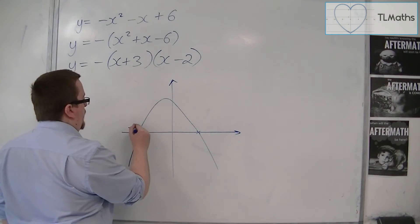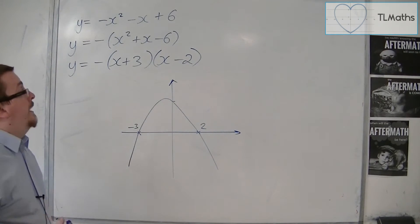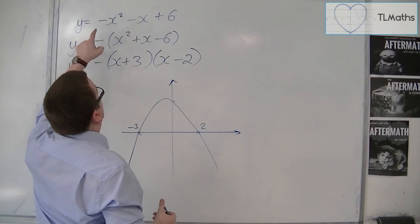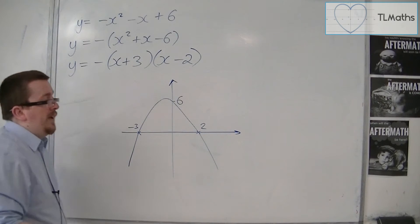So there's minus 3, there's 2. We can also tell where it's crossing the y-axis because that's where x is 0, and so 0, 0, 6. And so it must pass through 6.